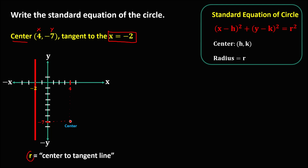To find the radius, we measure from the center to the tangent line. Using the counting method on the opposite side: 1, 2, 3, 4, 5, 6 — so the radius is equal to 6. We now have the three values: h, k, and r. From the center, h is positive 4 and k is negative 7.